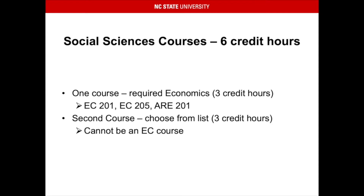Social sciences courses count for six credit hours worth of your GEPs as well. One course is required to be economics, which totals three credit hours. You can take EC 201, EC 205, or ARE 201 to fulfill this requirement. The second course you can choose from the list, which will total three credit hours, but it cannot be an economics course. The list is linked below.